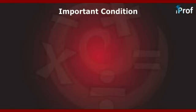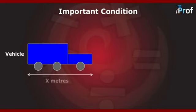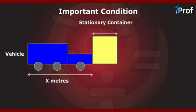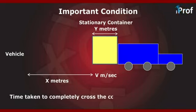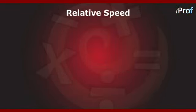Now suppose we have a vehicle of length x meters and a stationary container of length y meters, and the vehicle is moving at v meters per second. The time taken to completely cross the container is equal to (x + y) / v seconds. We will now go through the important concept of relative speed.